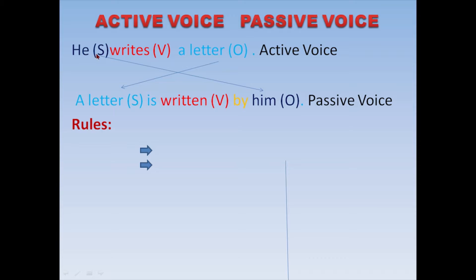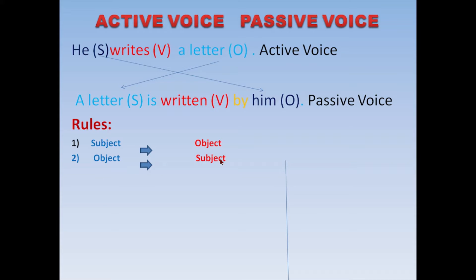The first rule is: subject will become object. You saw that 'he' changed into 'him'. The second rule is: object will become subject. A letter became the subject — 'A letter is written by him.' Subject became object and object became subject. These are the first two rules.